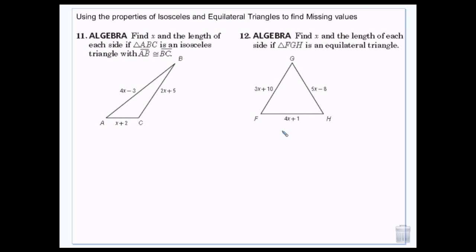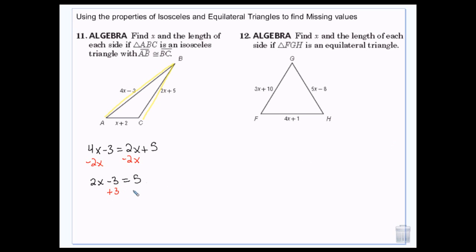The properties of equilateral and isosceles triangles let us define missing variables and side lengths. If we know we're isosceles, we know that two sides are the same length. Here AB and BC are congruent — those are the two sides that are the same length. Since they're equal, I can set them equal to each other and solve for x. Subtract 2x from both sides, add 3 to both sides, and I get 2x equals 8. Divide by 2, and x equals 4.